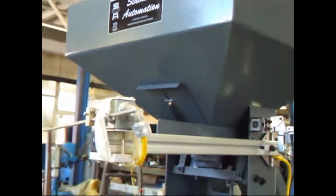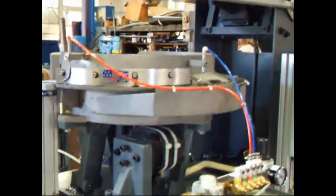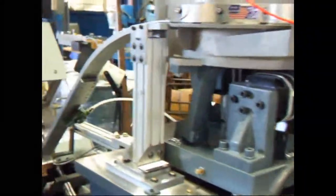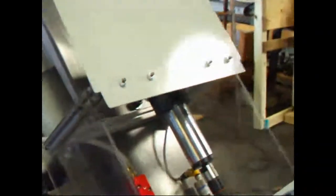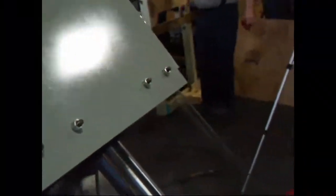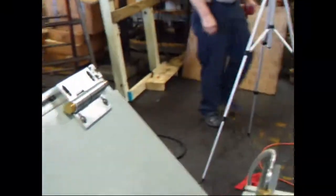The bulk storage hopper automatically maintains the level of parts in the feeder bowl. The hopper capacity enables approximately eight hours of unattended operation. The work area is totally enclosed when operating. One of the hinges on the enclosure cover features a safety interlock switch.